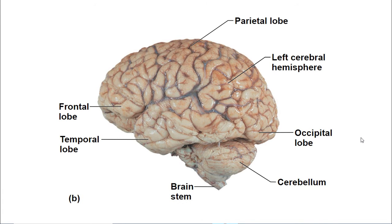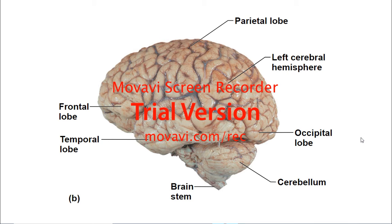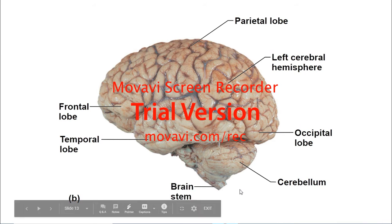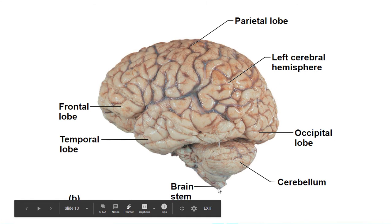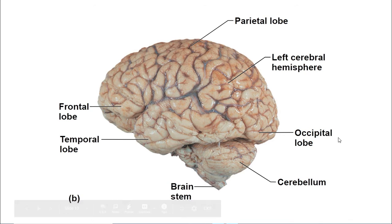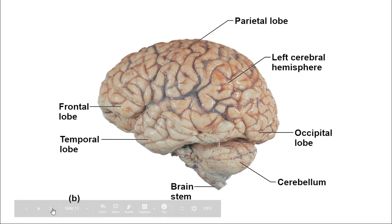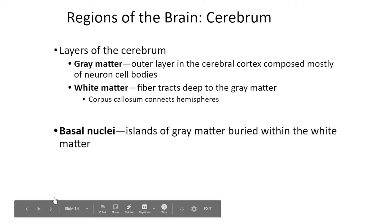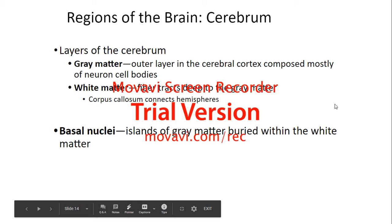Here is a diagram just showing you the different lobes again — the frontal lobe, temporal lobe, parietal lobe, and occipital lobe. You can also see the cerebellum and the brainstem in this diagram.